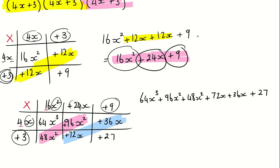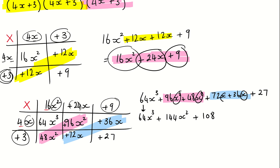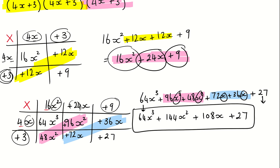So that's 27. Note that you've got two lots of like terms: the x squareds, which are alike, and the x's, which are alike. So: 64x cubed. Get your calculator and do 96 plus 48 — that's 144x squared, you don't change the powers. Then 72 plus 36 gives you 108, so it's 108x. And then, of course, plus 27. And that is your final answer.